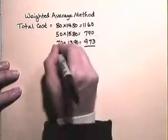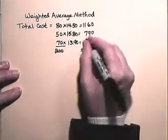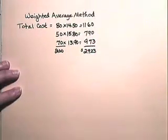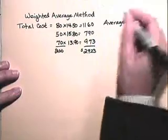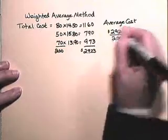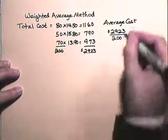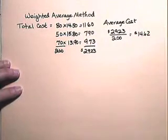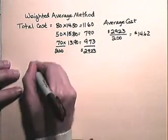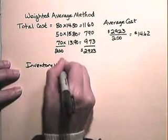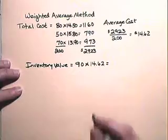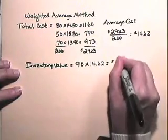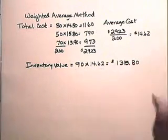So we have 200 units that were purchased. We find an average cost by dividing $2,923 by 200 units, and we find an average cost per unit of $14.62. Now, in inventory we have 90 units. So the weighted average inventory value will be 90 units times the average cost per unit of $14.62, giving an inventory value by the weighted average method of $1,315.80.